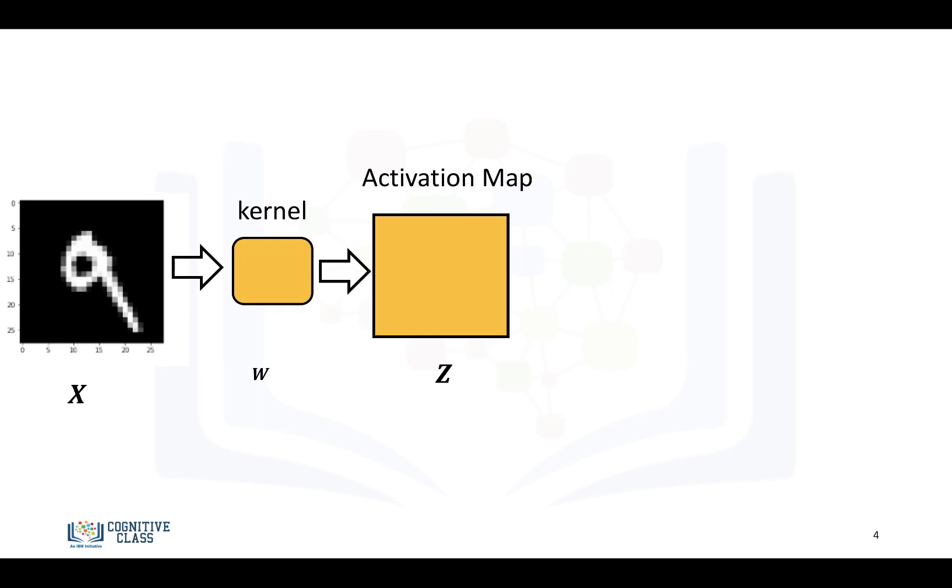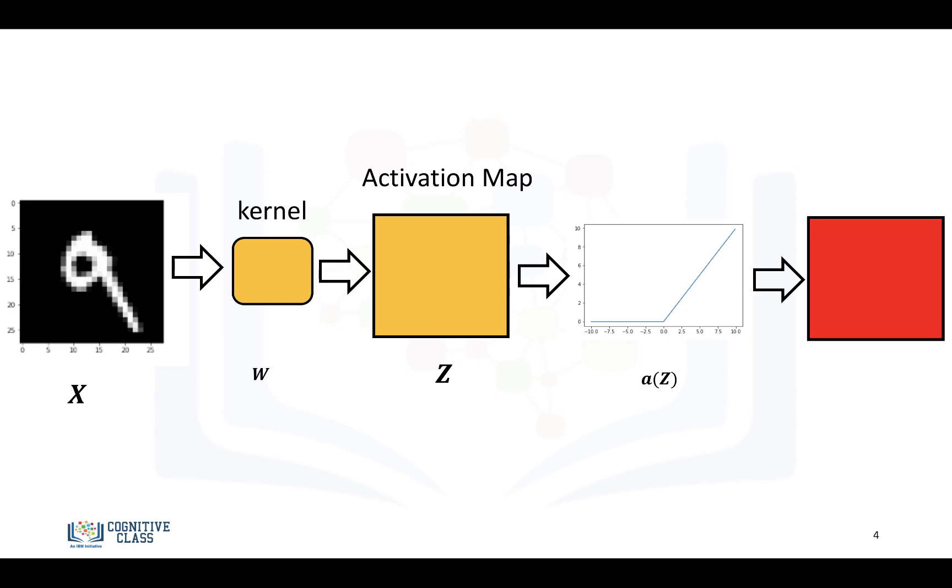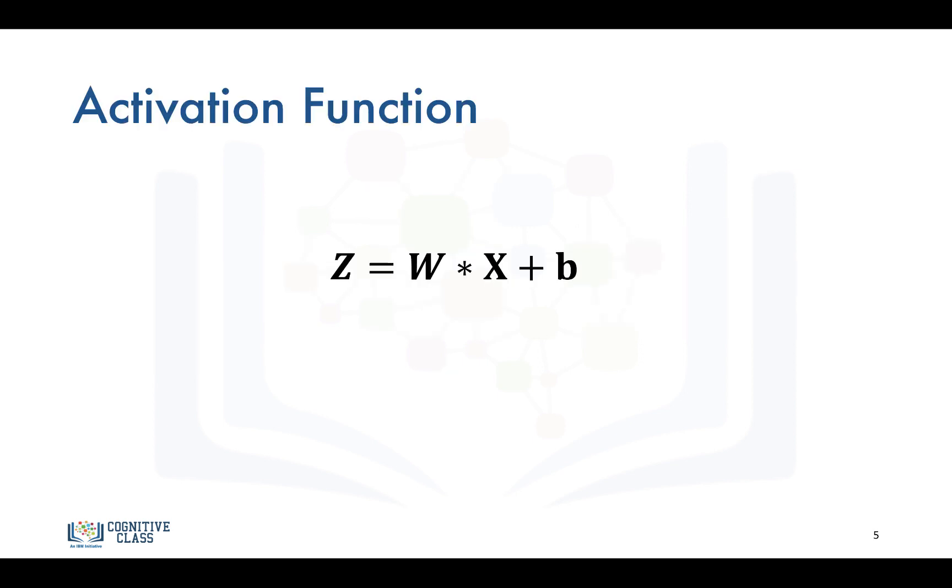So we took our block diagram from before, and we're simply going to apply an activation function to each element of the activation map, and we'll get an output. So we have the feature map Z, and we'll apply an activation function to it.